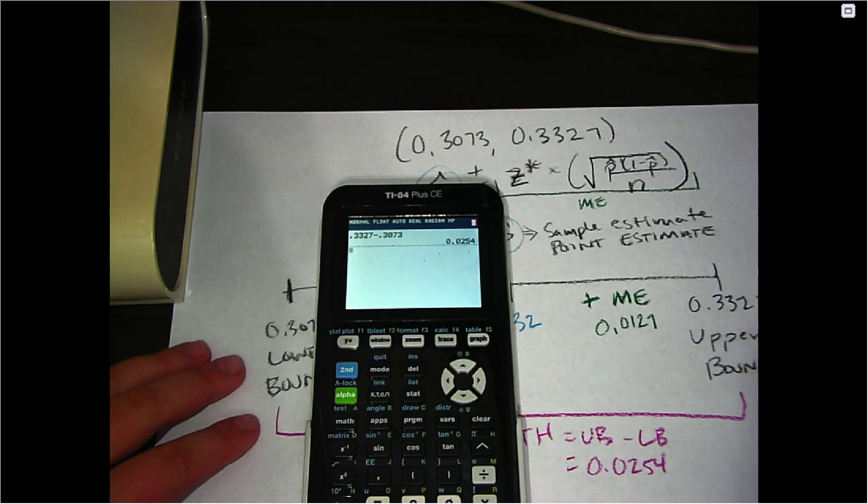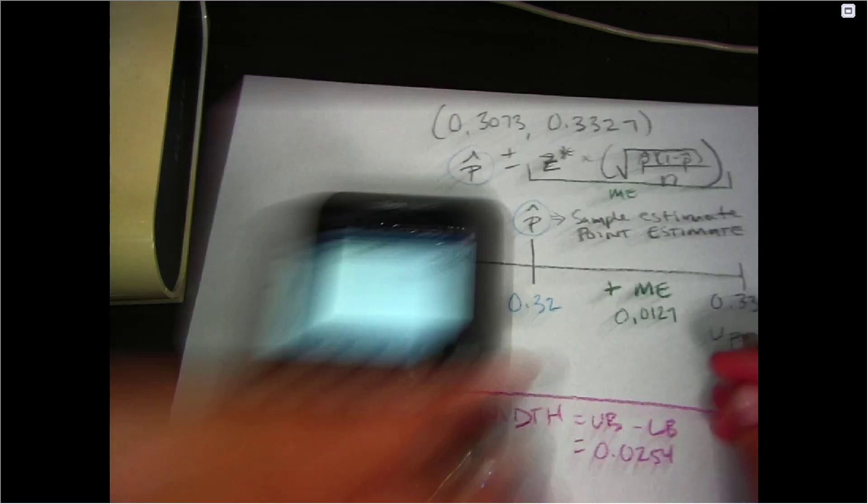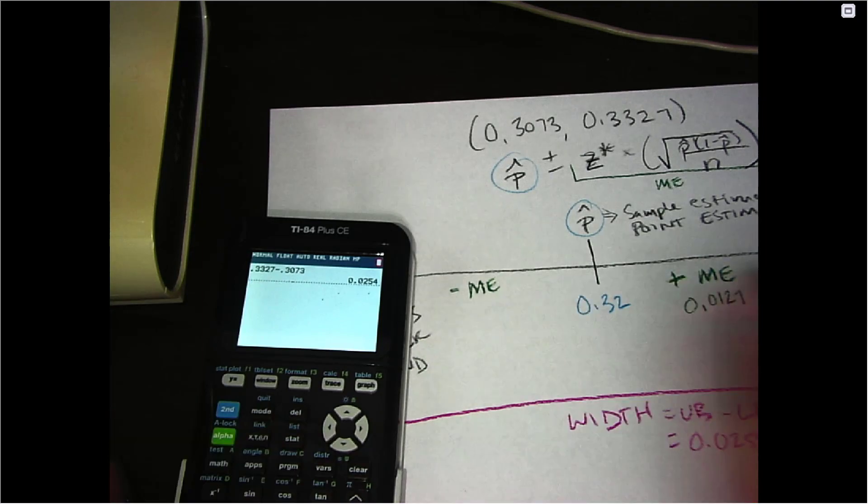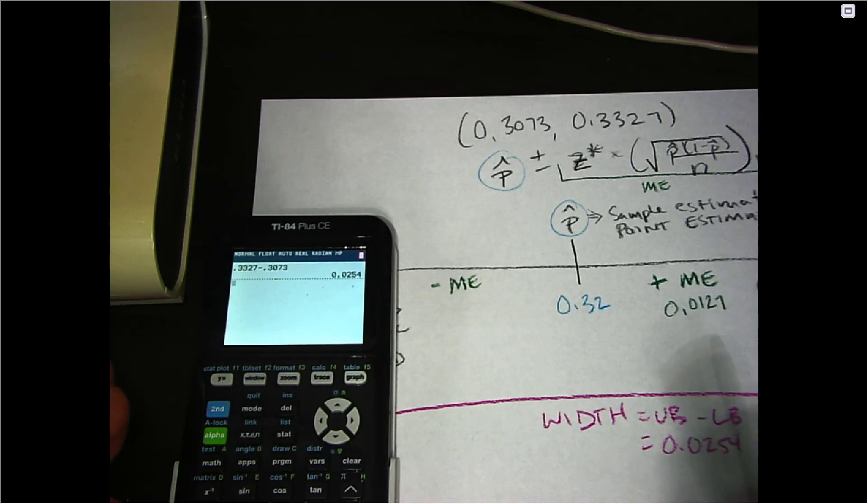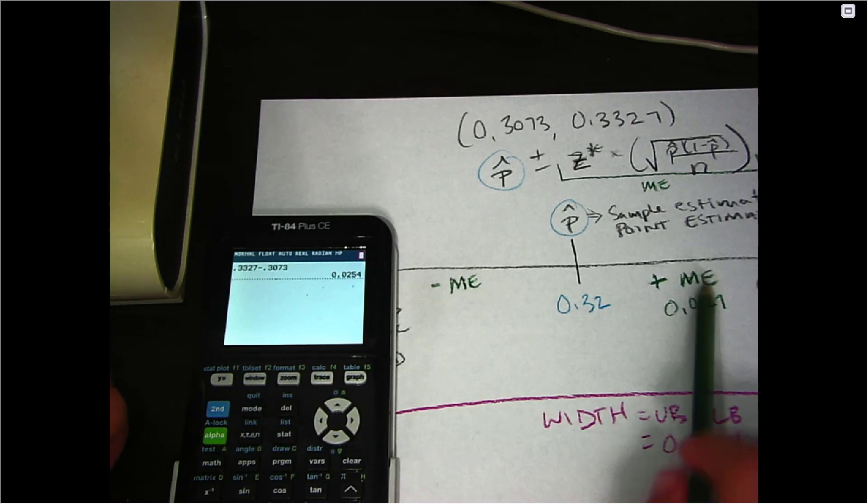Next, if I wanted to find that margin of error estimate, well, how many margins of error are there in a confidence interval? One, two, because you add and subtract.